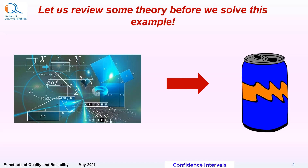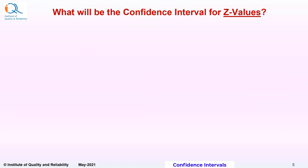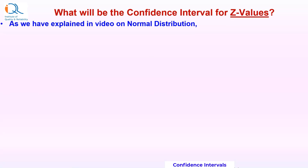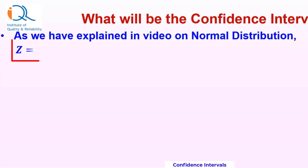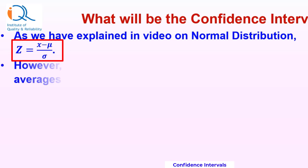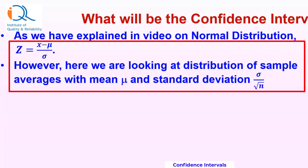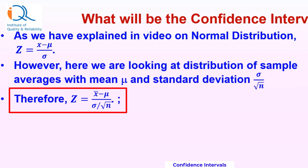Let us review some theory before we solve this example. We begin with the confidence interval for z values with reference to standard normal distribution. As explained in the video on normal distribution, z score is given by x minus mu by sigma, where mu is the population mean and sigma is the population standard deviation. However, in this case, we are looking at distribution of sample averages with mean mu and standard deviation of sigma by square root n. The sigma by square root n is based on central limit theorem. Therefore, z score is equal to x bar, the sample average, minus population mean mu, divided by sigma by square root n.